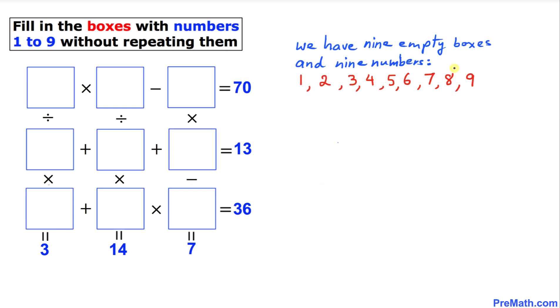Now we are going to pick two numbers from here. 8 times 9, if we multiply 8 times 9, is going to be 72. If we subtract 2 from here, that means we are going to get 70. That's what it is. So that means we are going to pick 8, 9, and number 2.